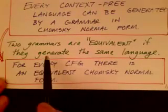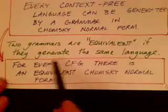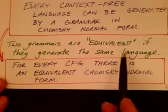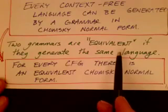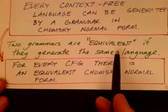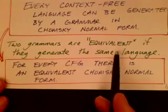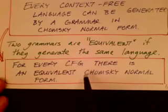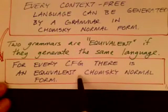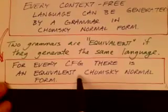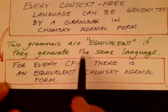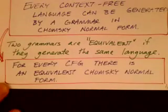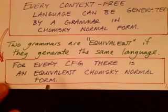Remember what we mean by equivalent: two grammars are equivalent if they generate the same language. It turns out that checking the equivalence of two context-free grammars is undecidable in general, but here we'll show that for every context-free grammar there is an equivalent grammar in Chomsky normal form. Our proof is constructive — we'll show how to take a context-free grammar and put it into Chomsky normal form.